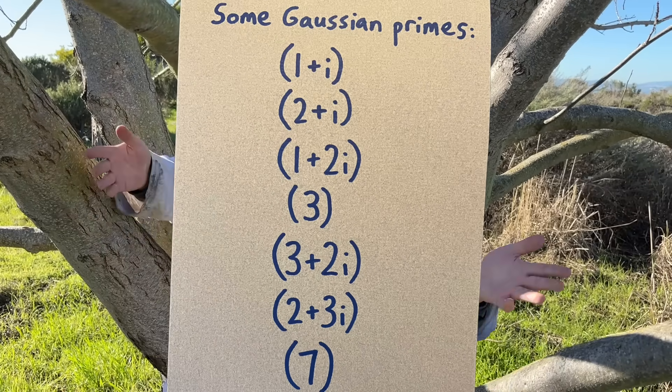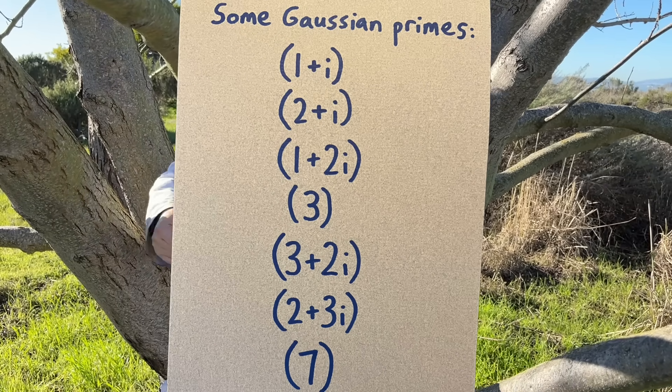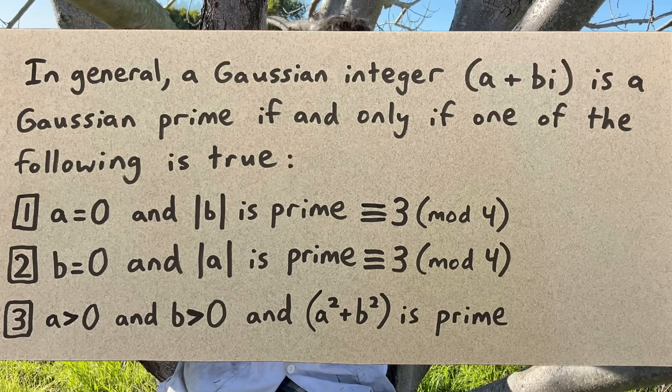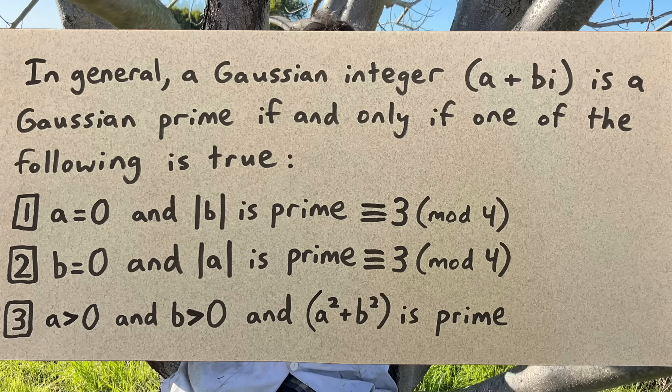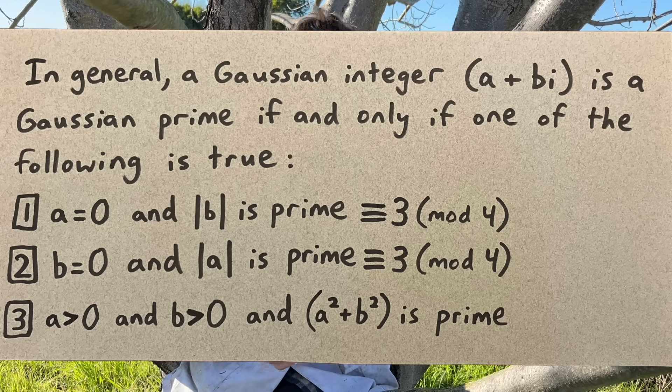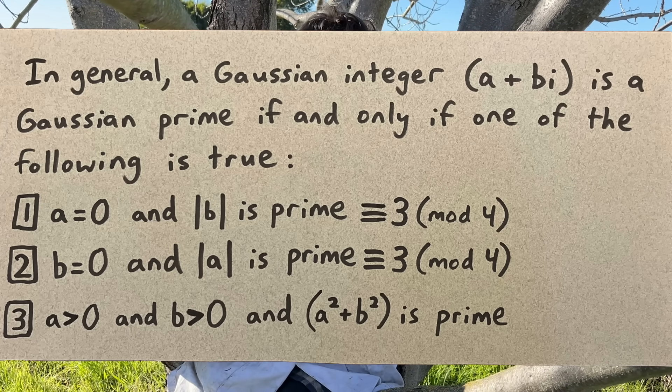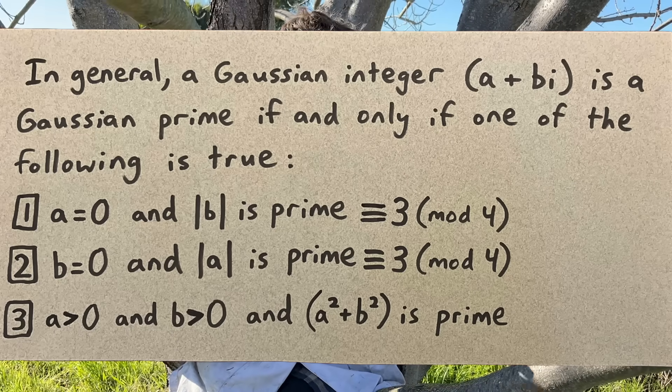And Gaussian primes can also be Gaussian integers that aren't real numbers. So here are some general rules that have been proven for which Gaussian integers will turn out to be Gaussian primes.